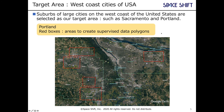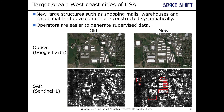The target area is the west coast cities of the USA, such as Sacramento in California and Portland in Oregon. Here we show areas for supervised training with red boxes in Portland. In that area, new structures such as shopping malls, warehouses, and residential land developments are large and constructed systematically, so it is easy for operators to generate supervised data.